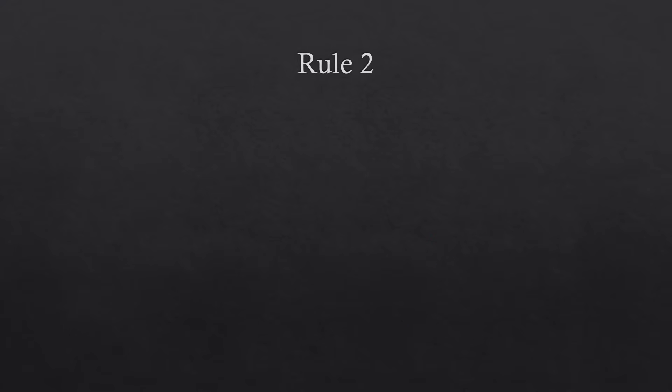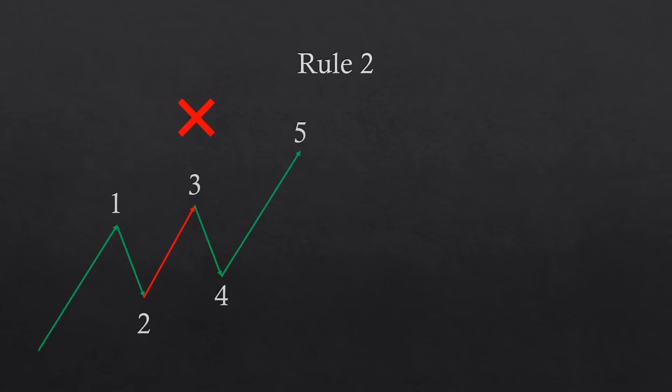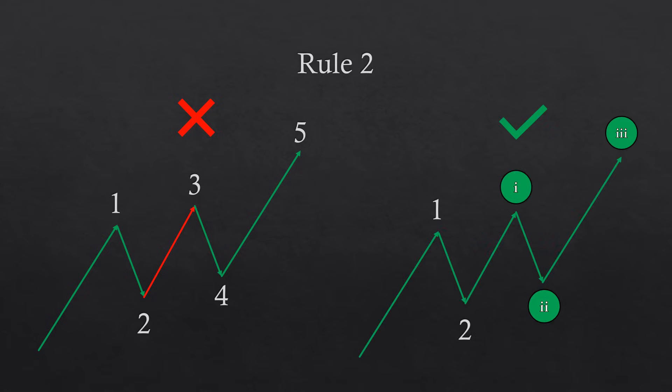Rule two states that wave three cannot be the shortest wave. If you find a situation where the middle wave is the shortest, it cannot be a wave three — wave three is usually the largest wave in the count. What is being labeled as waves three, four, and five in that scenario is usually waves one, two, and three of an extended wave three in a lower degree, which will be discussed in greater detail later.